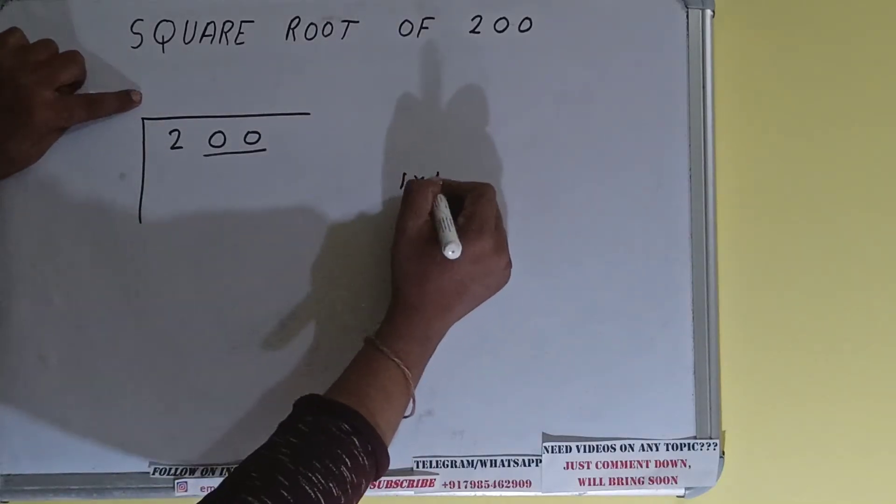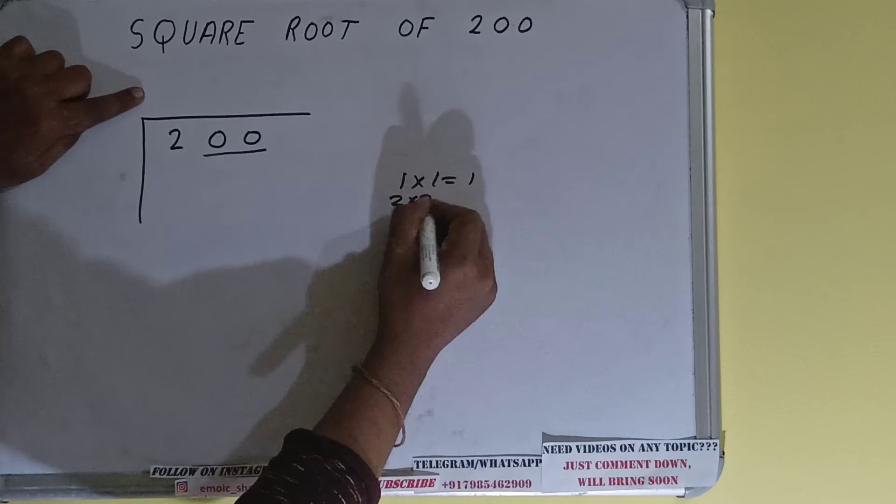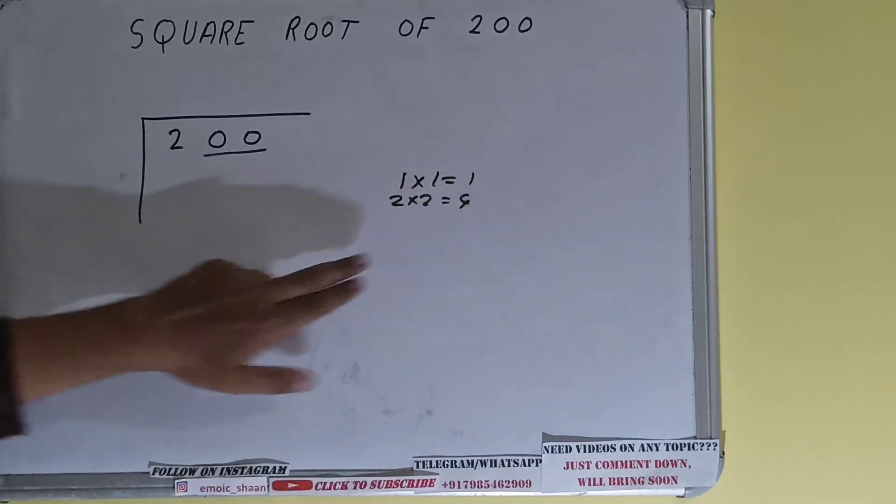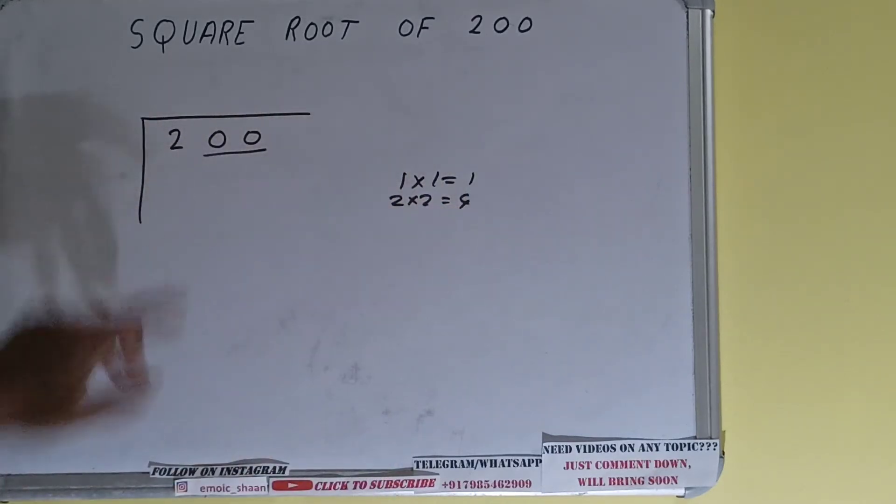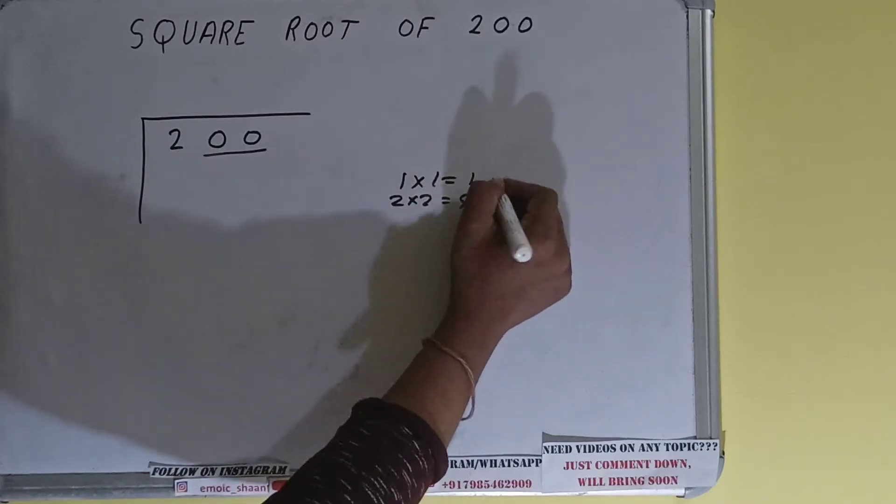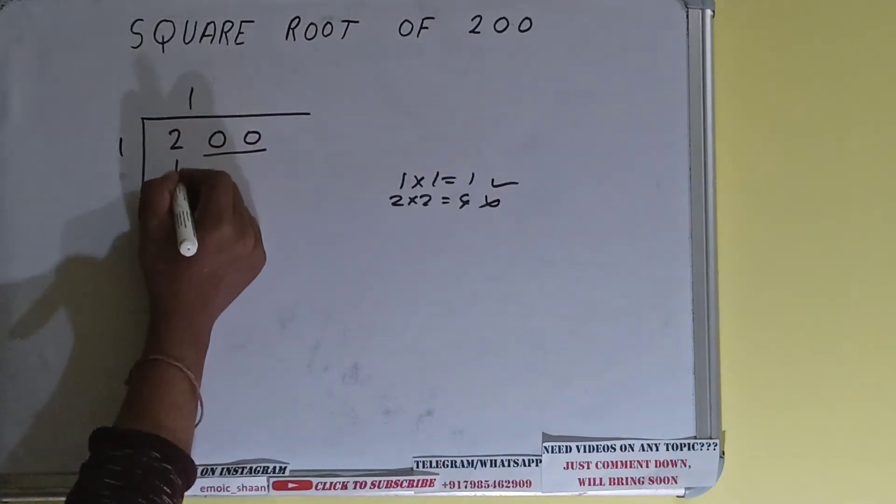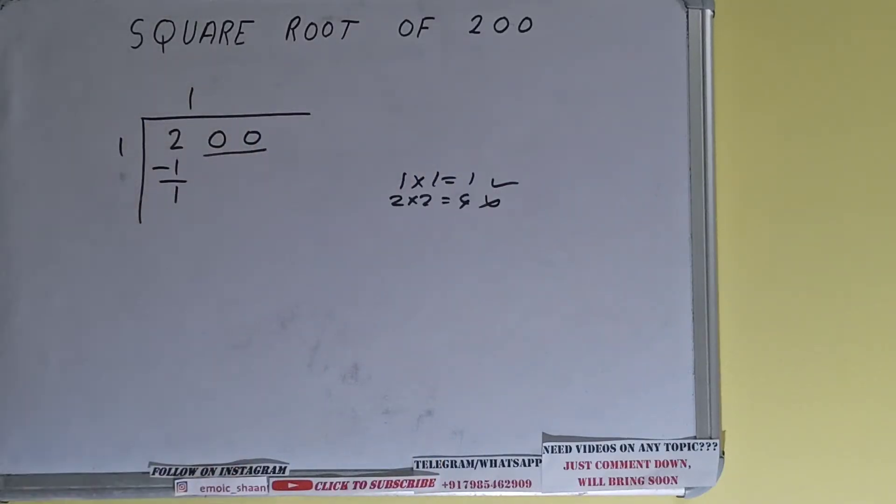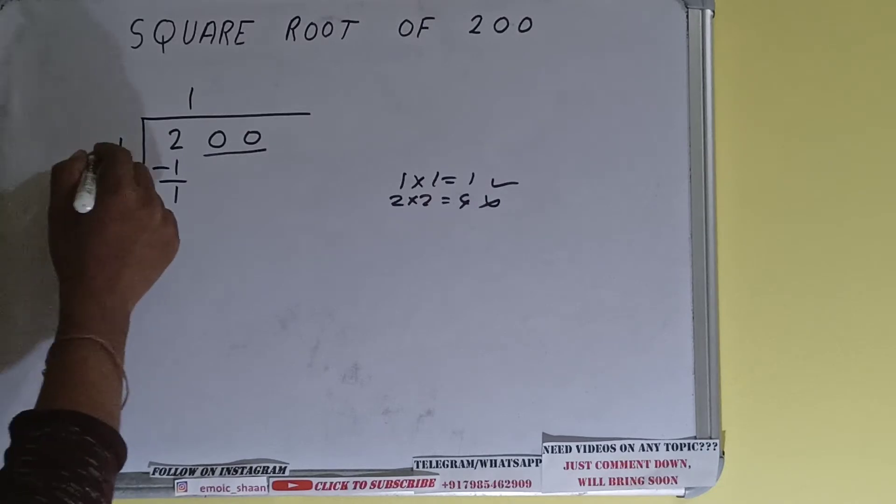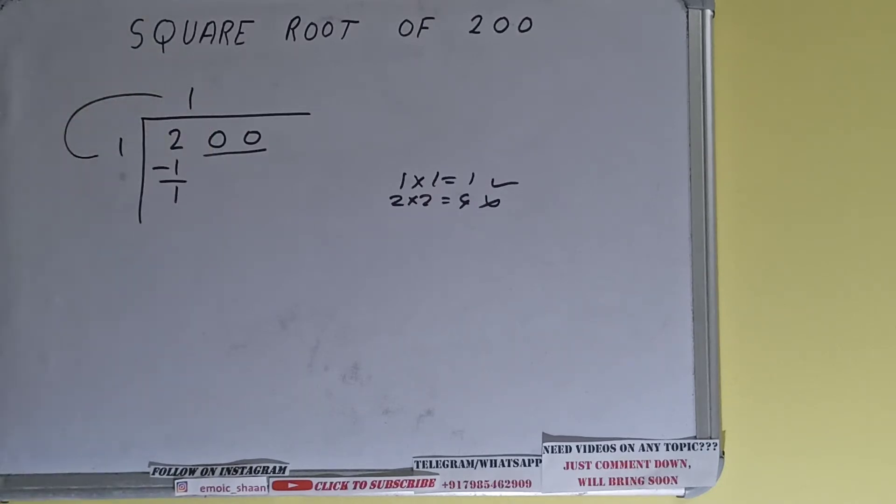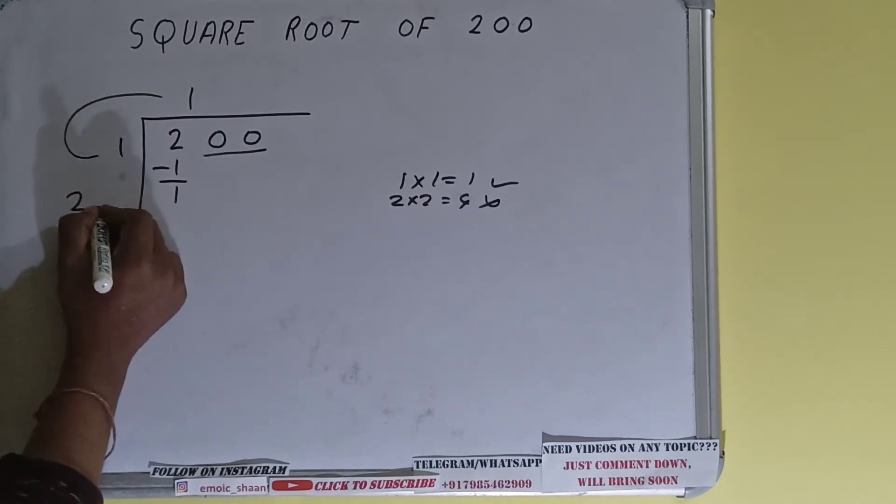If we write one here and one here it will give one. If we write two here and two here it will give four. Now we cannot use two because four is greater than two, so we have to go with one. One here and one here will give one. Subtract it, that is one. Now we did one into one, right? So do one plus one, it will be two. Write it over here and keep one extra digit over here.